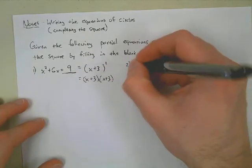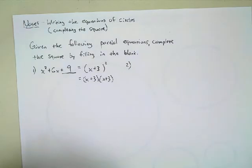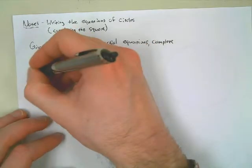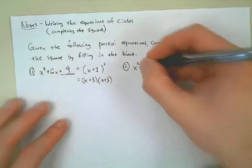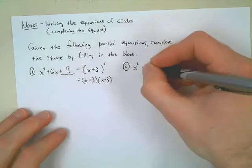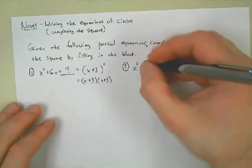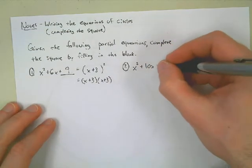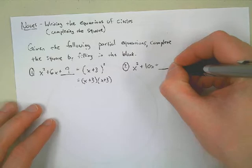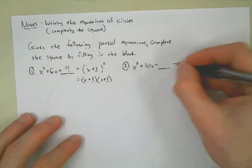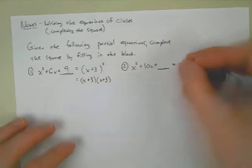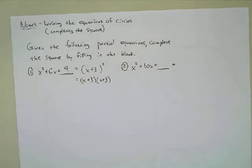Let's try another one. How about x squared plus 10x plus blank? What's going to make this thing a perfect square? What can we add here?